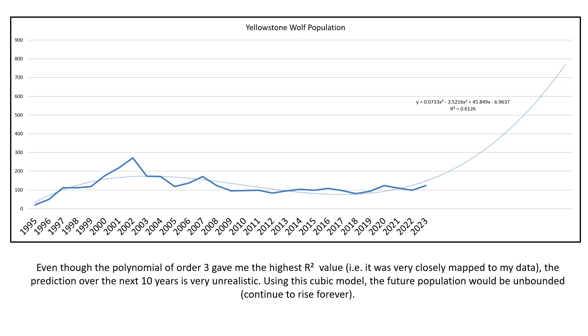Even though my polynomial of order three gave me the highest R-squared value, so it was the closest map to my data, the prediction over the next 10 years is making it clear that this is not going to be a good model if I want to predict population in the future. That is just as important as how it mimics the data now.